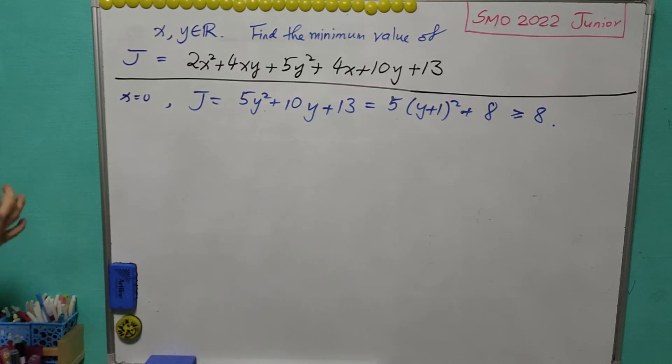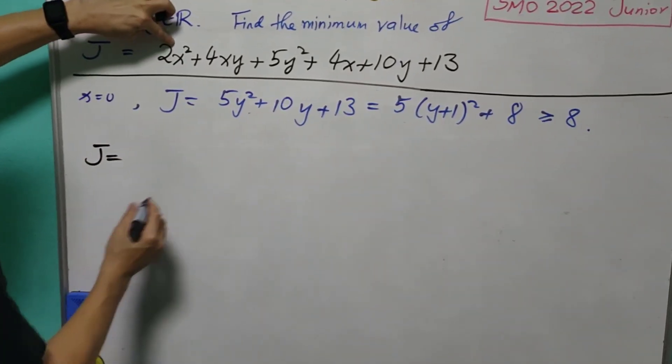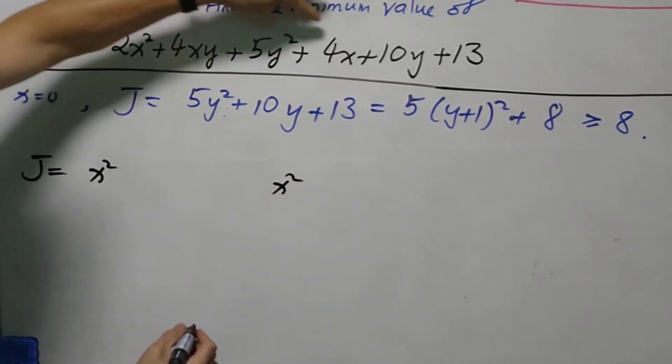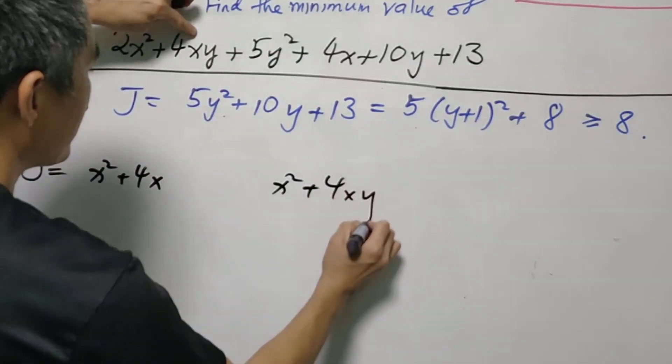So for the general x and y, we can write 2x squared as x squared and x squared. Then 4x, write it here. 4xy, write it here.